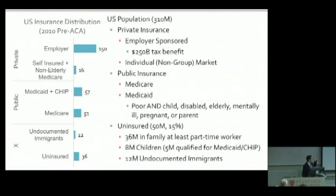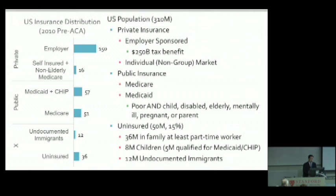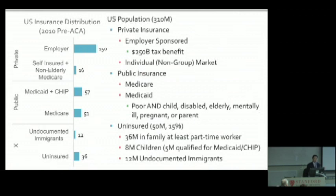There are also people on Medicare — the elderly, for example, are actually pretty happy with the system. You also have a bunch of people on Medicaid. Before the ACA, being poor was not good enough; you had to also basically not be able to work — so you're a child, you're disabled, you're mentally ill, or you're pregnant. If you were an able-bodied but childless adult who was poor, you were still out of luck. Medicaid was not designed to help you. Really what they were trying to do was go after the uninsured — about 50 million people had no health insurance coverage in the US.